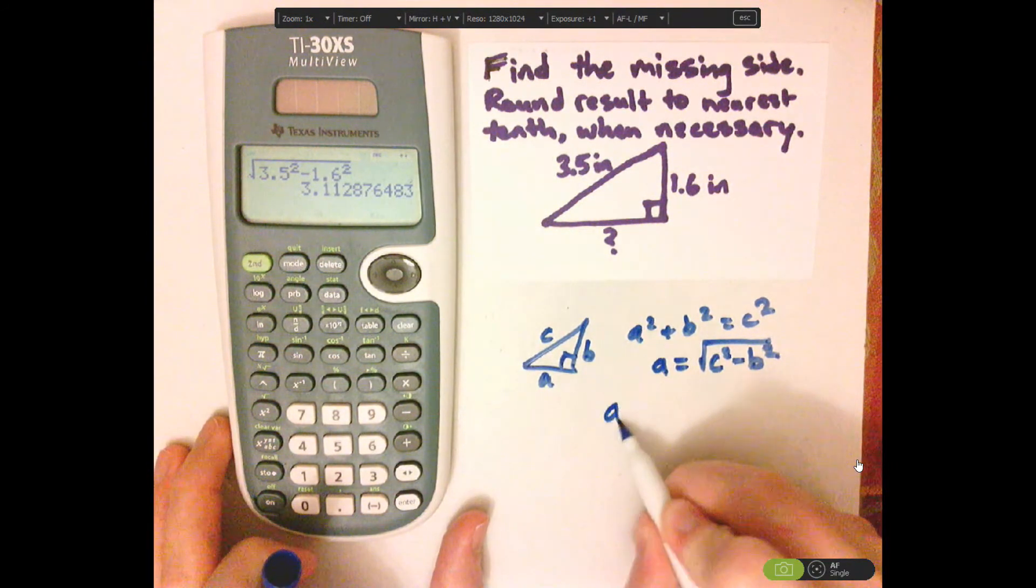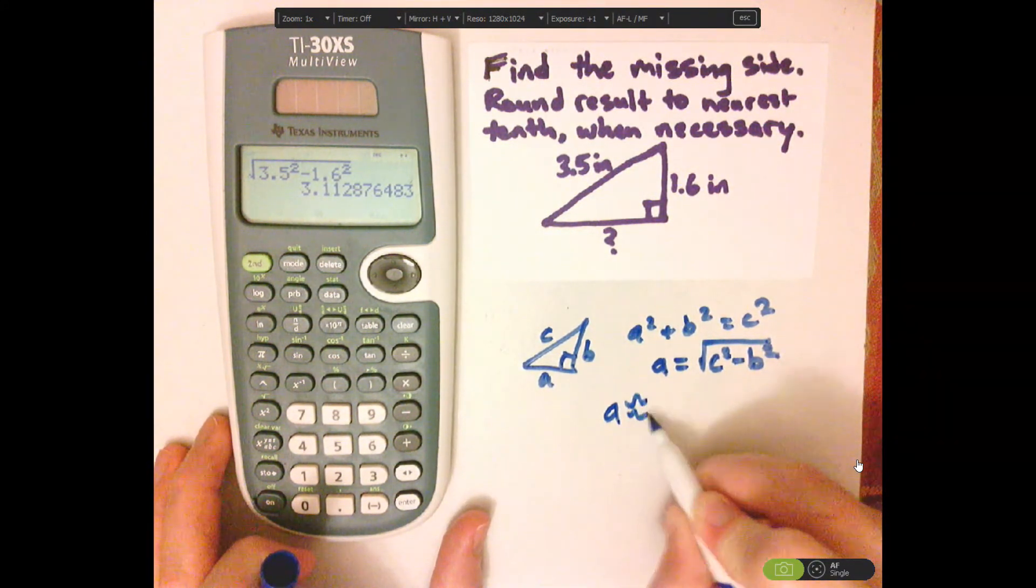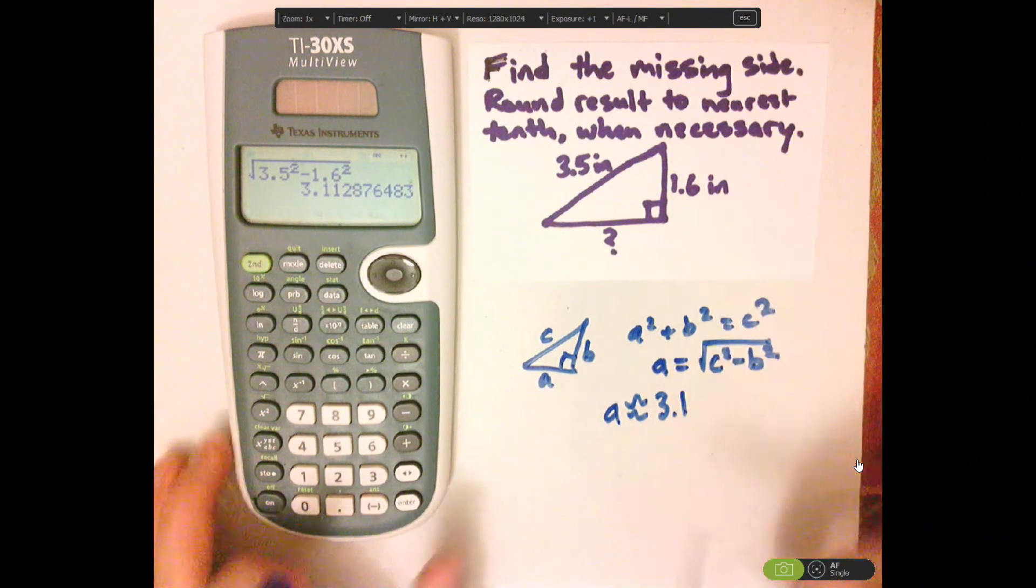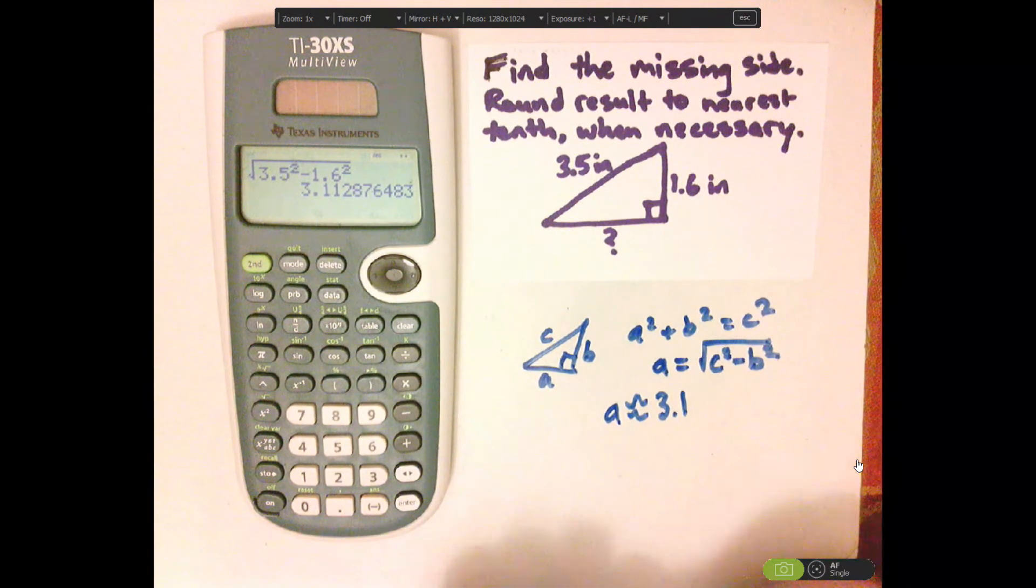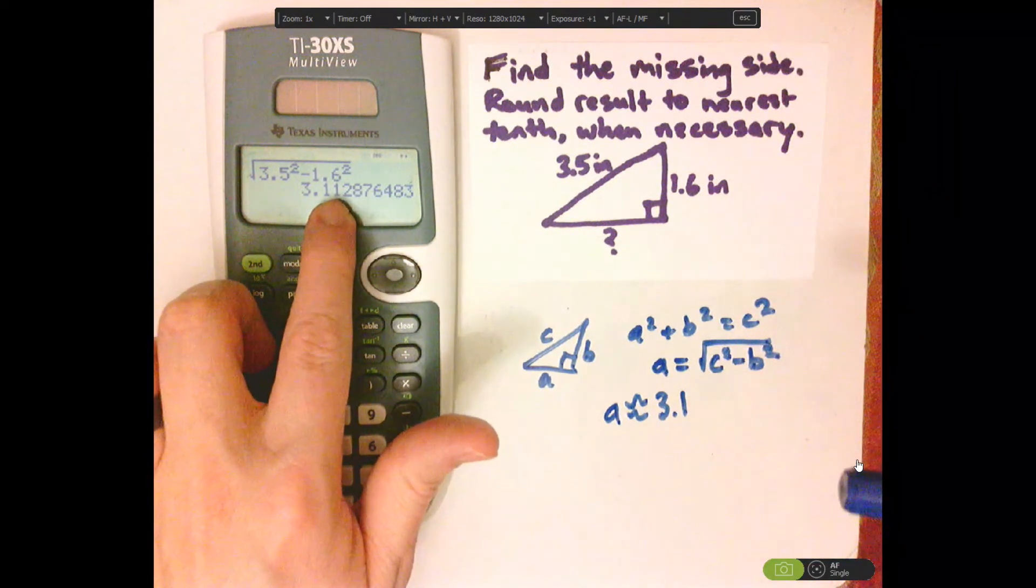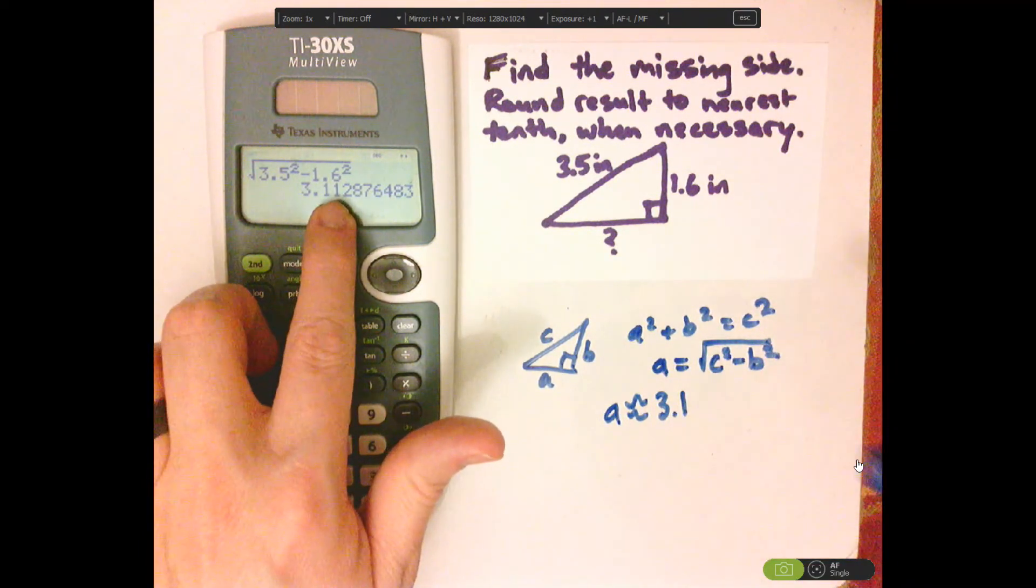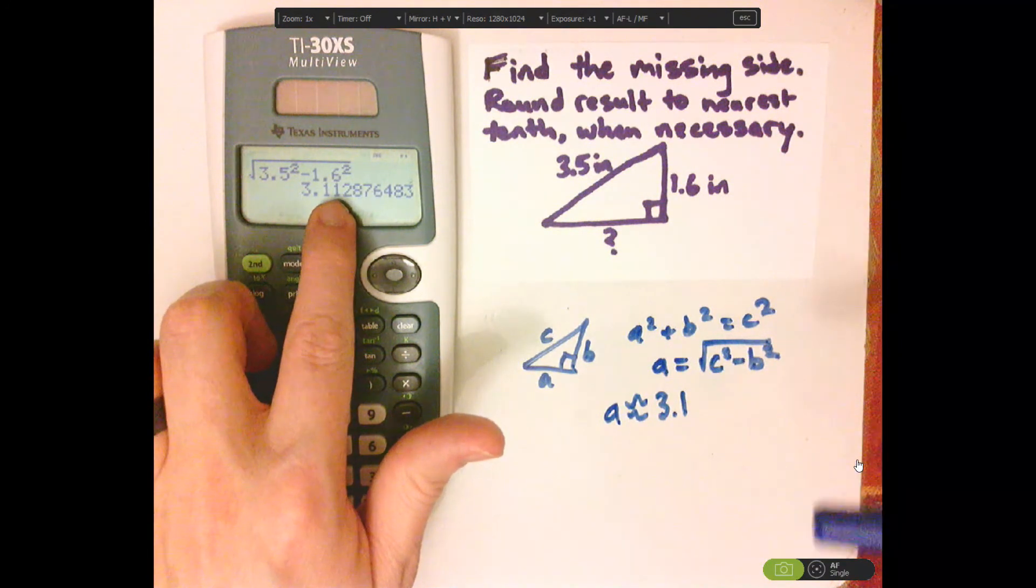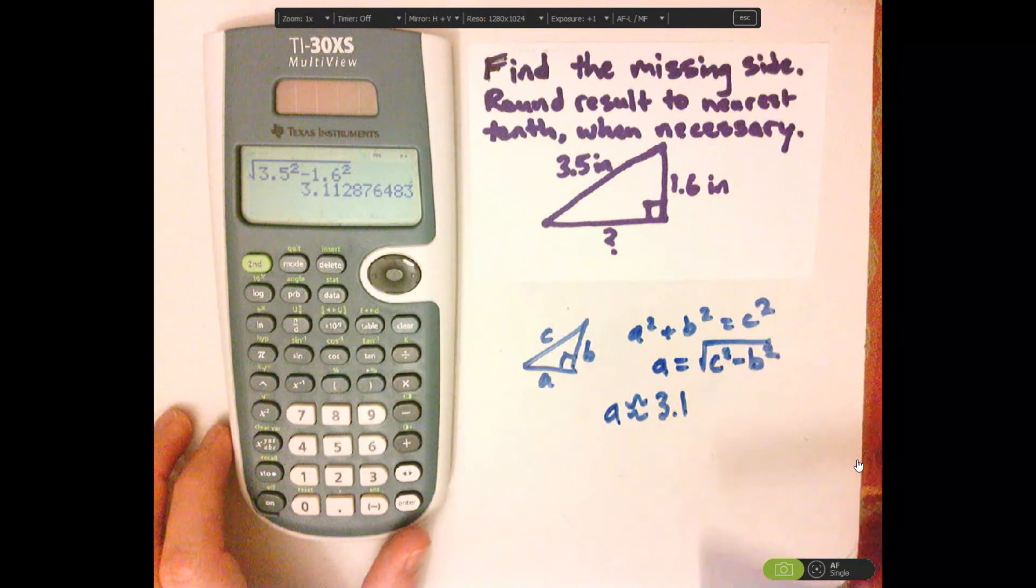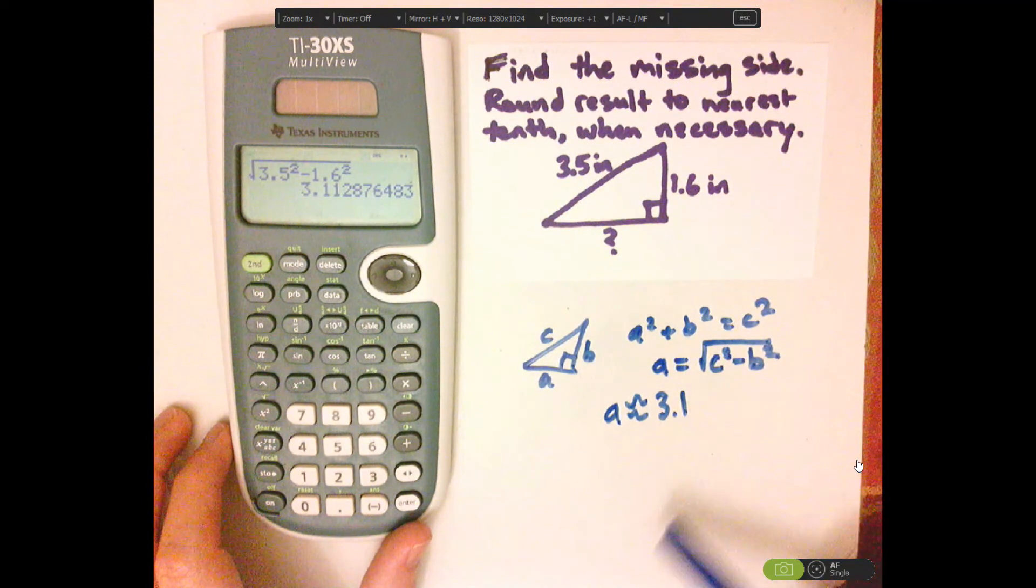So A would be approximately 3.1, because it's telling us to round to the nearest tenth. 1 is low, if it was 5 or above, then you would round up. Here it's below 5, so you round down.